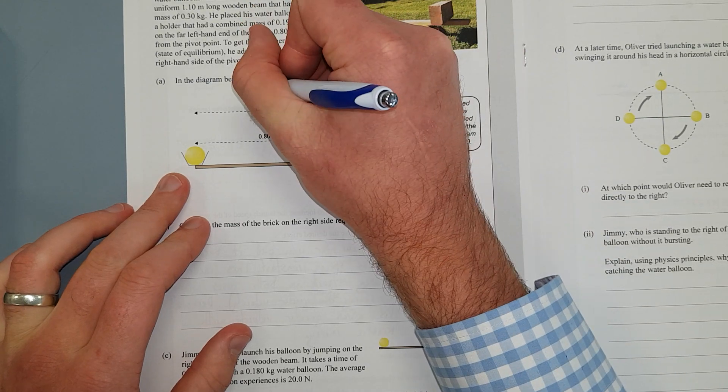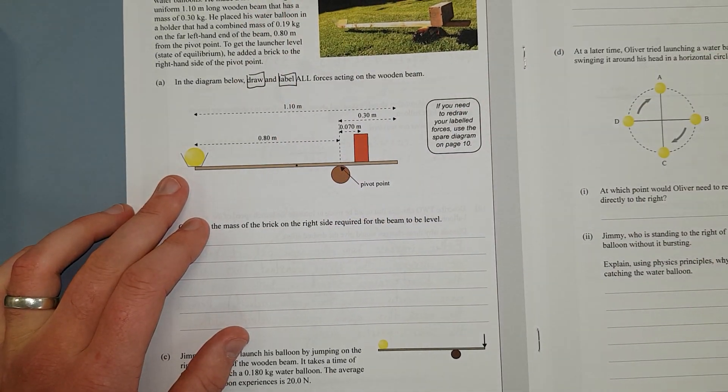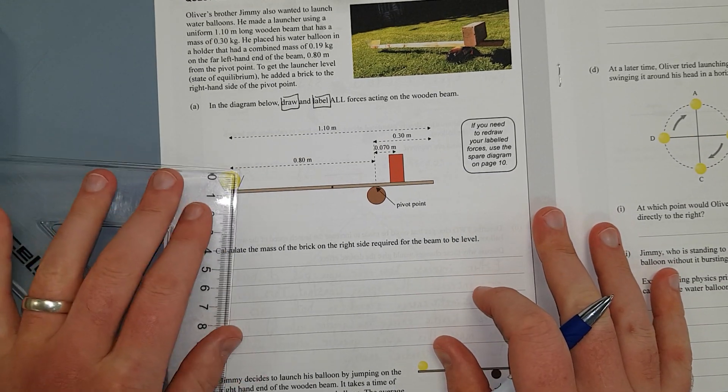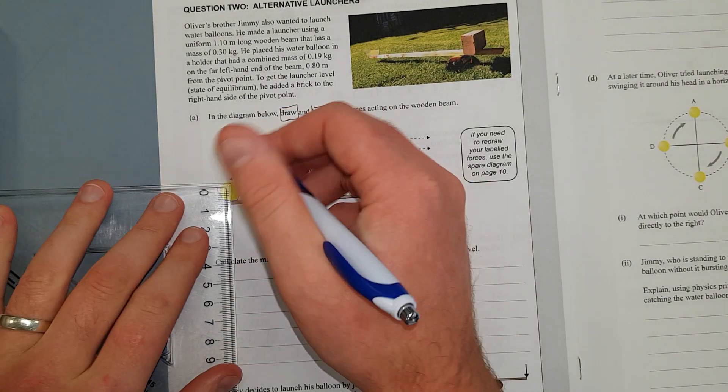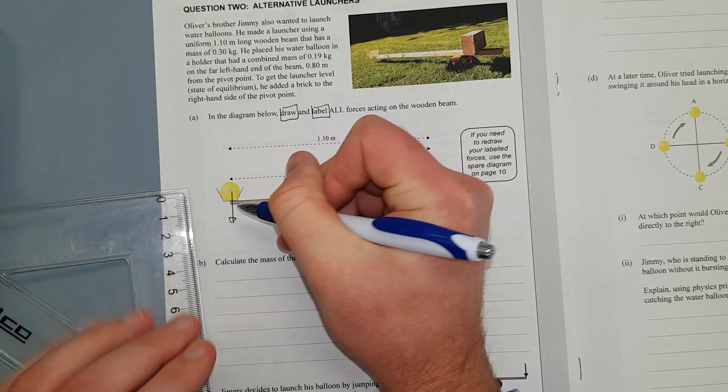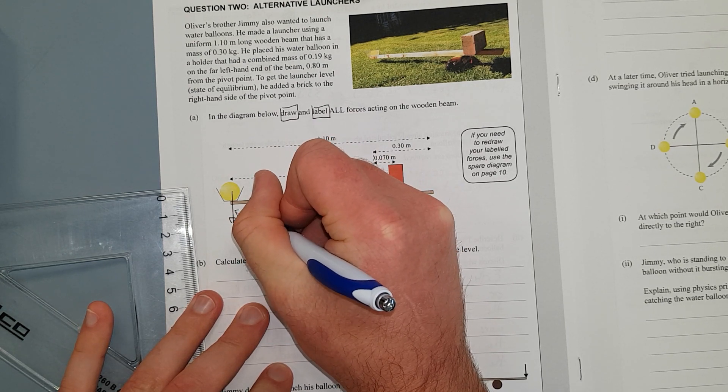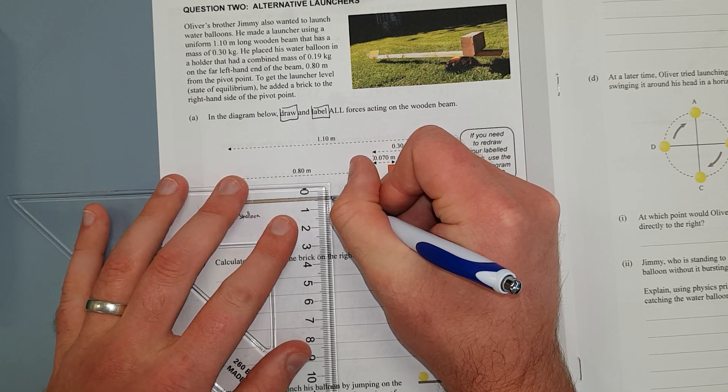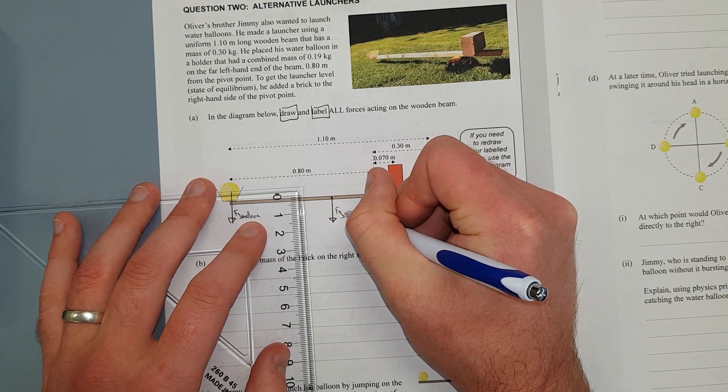Right, so you need to draw—obviously you need to put them in, and labels you need to actually label them. You need to use a ruler, otherwise it looks like trash and the examiners wonder what you're doing. So, acting down, these don't have to be to scale. This is going to be FG balloon, because it is a balloon.